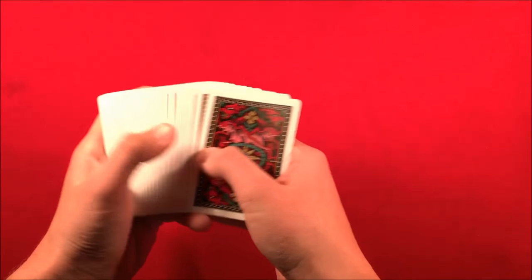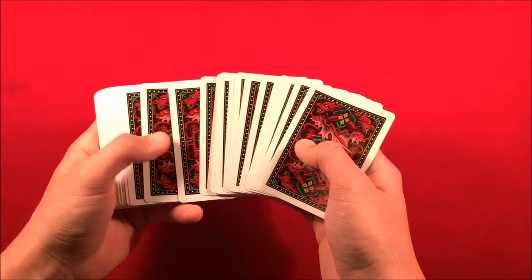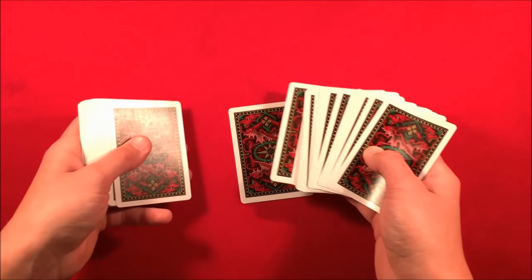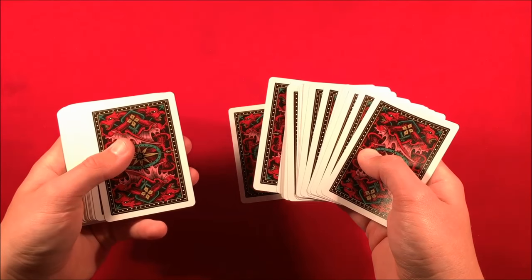At this point, you can start out by having the spectator tap on a card, and all you want to do is just drop it to the table because you don't want them to look at it. So in this case, let's say we drop their card and now we have two packets of cards.